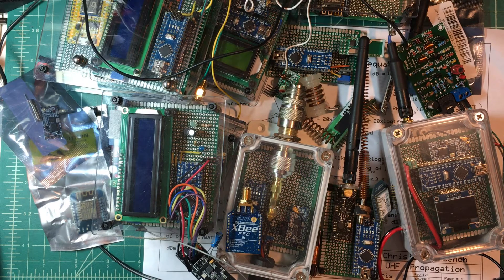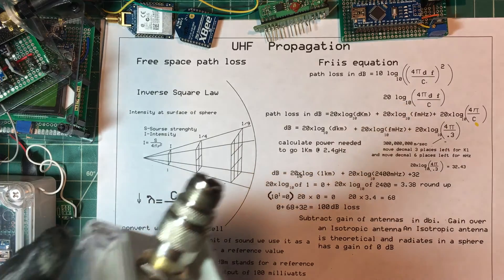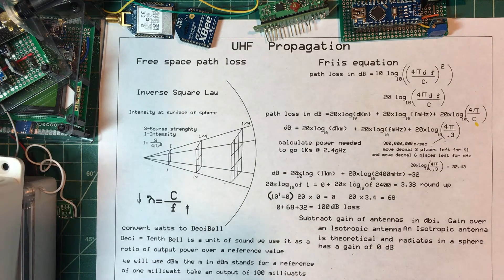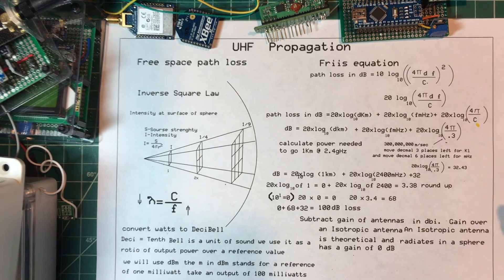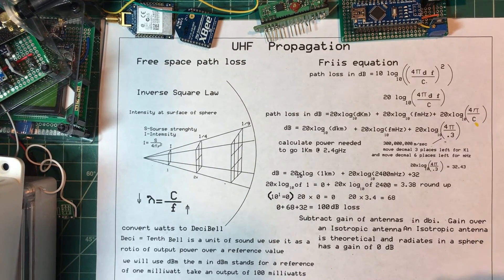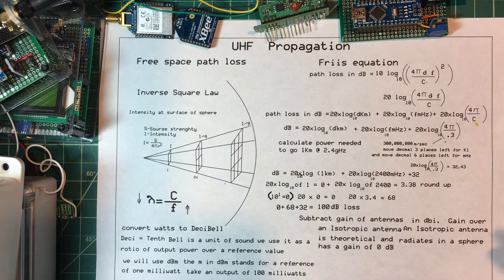I've been working with UHF transceivers — 300 to 3000 megahertz — and we know that they're line-of-sight, point to point. If you want to get from point A to point B and you know the frequency, you can calculate the amount of power you need. My background was in SCADA — supervisory control and data acquisition — and we used 2.4 GHz, 900 MHz, 450, even 150 MHz radio modems. These are all line of sight, but just because you can see the receiving antenna doesn't mean you can get there. There's what's known as free space loss.